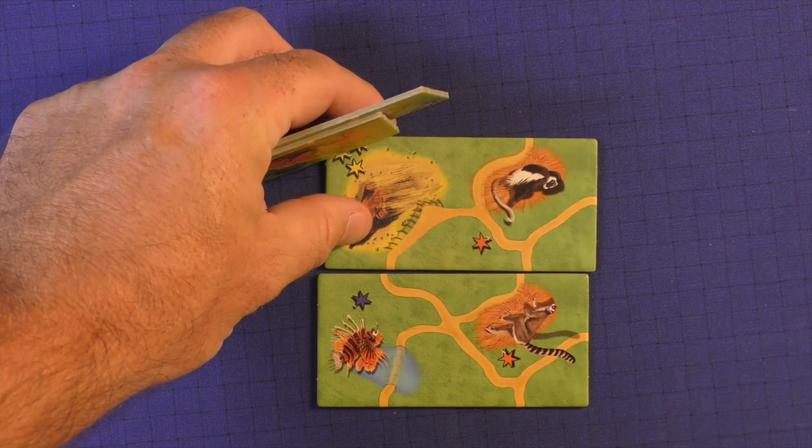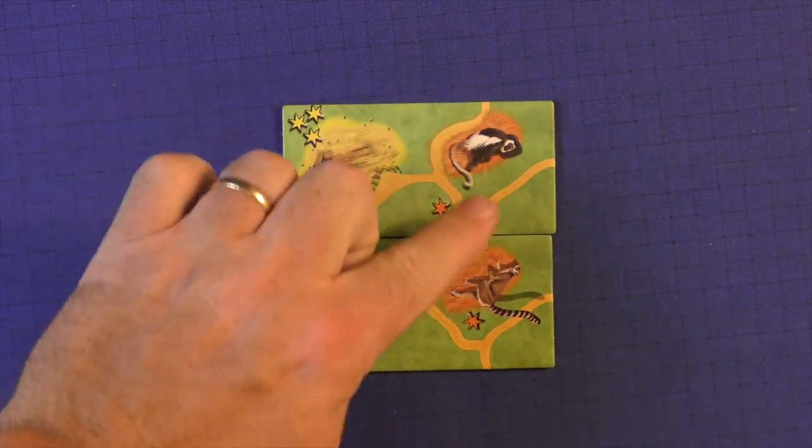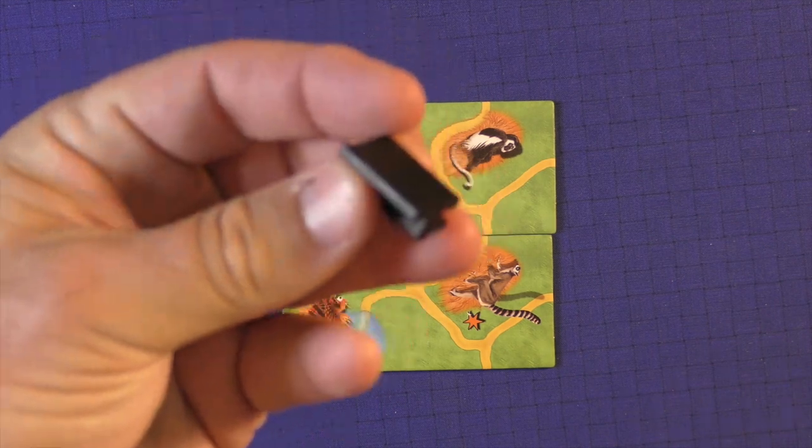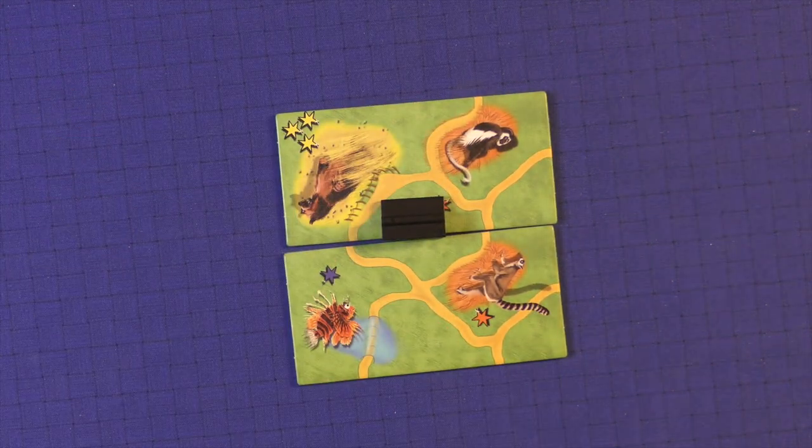That's very important because you need to create enclosures. So let me show you one here. Now we have an enclosure here where this path creates the circular things, so we would take a park bench and put it right in there.